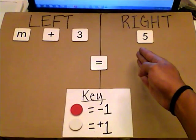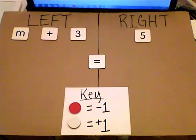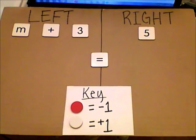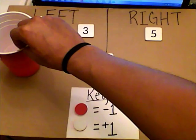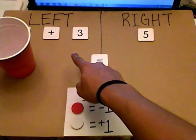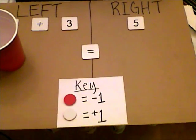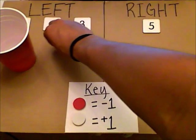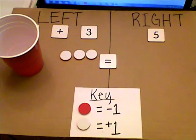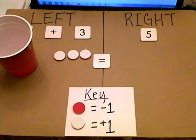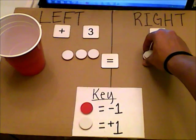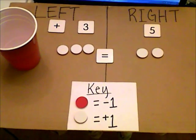To solve m plus 3 equals 5, I'm going to model it. For the variable m I'm going to use a cup. Since I'm adding 3 and addition uses the white side, I need to put 3 white counters on the left side. On the right hand side I have positive 5, so I'm going to put 5 white counters on the right hand side.